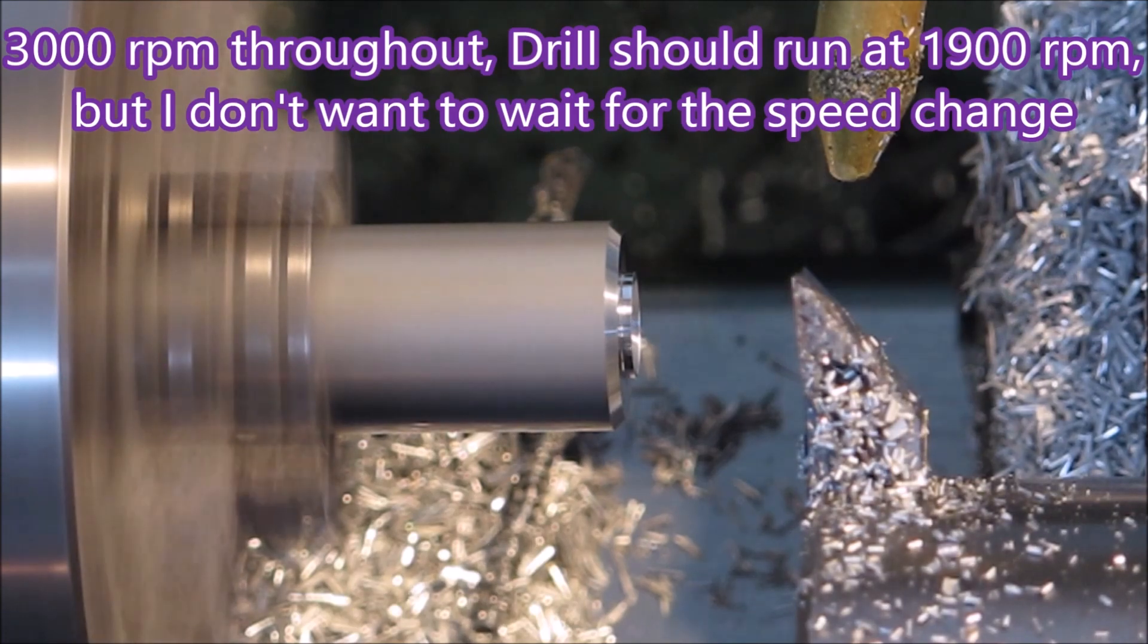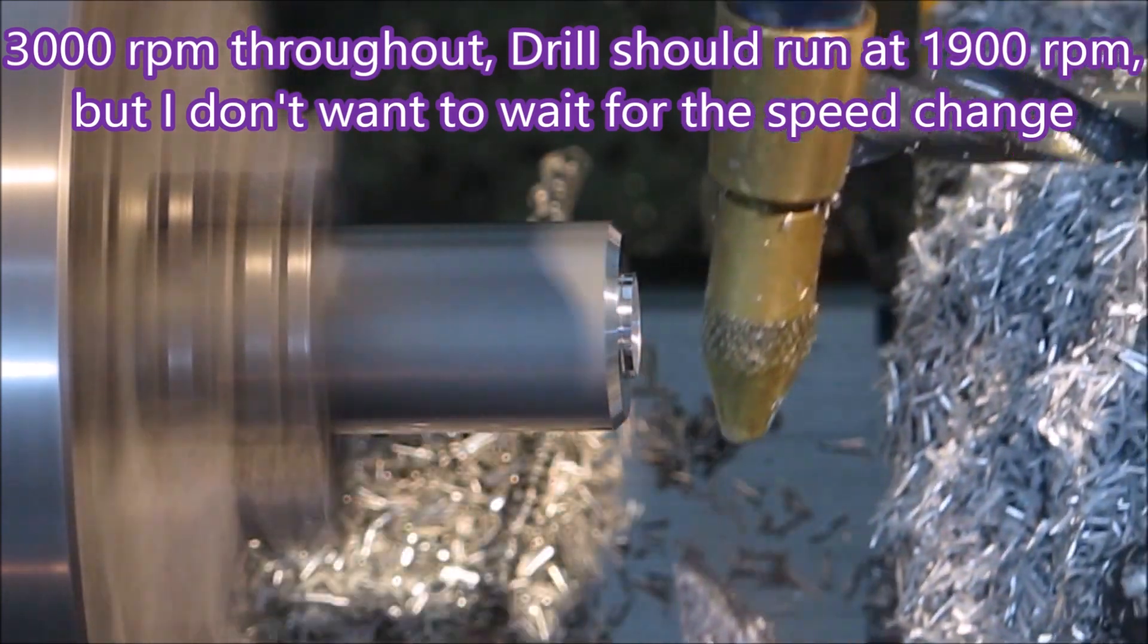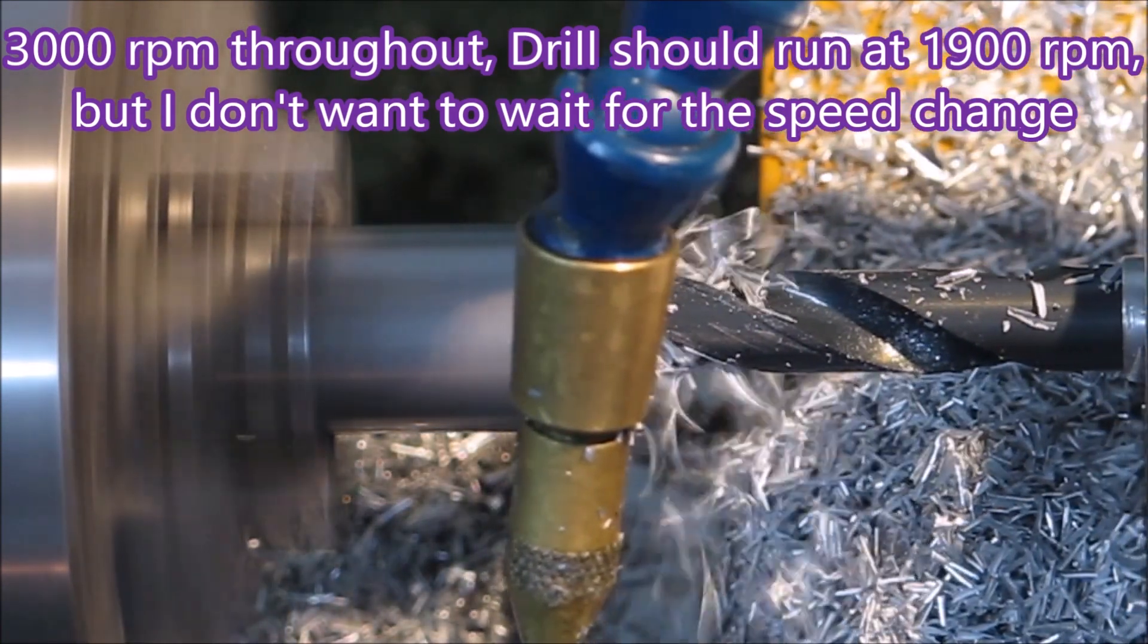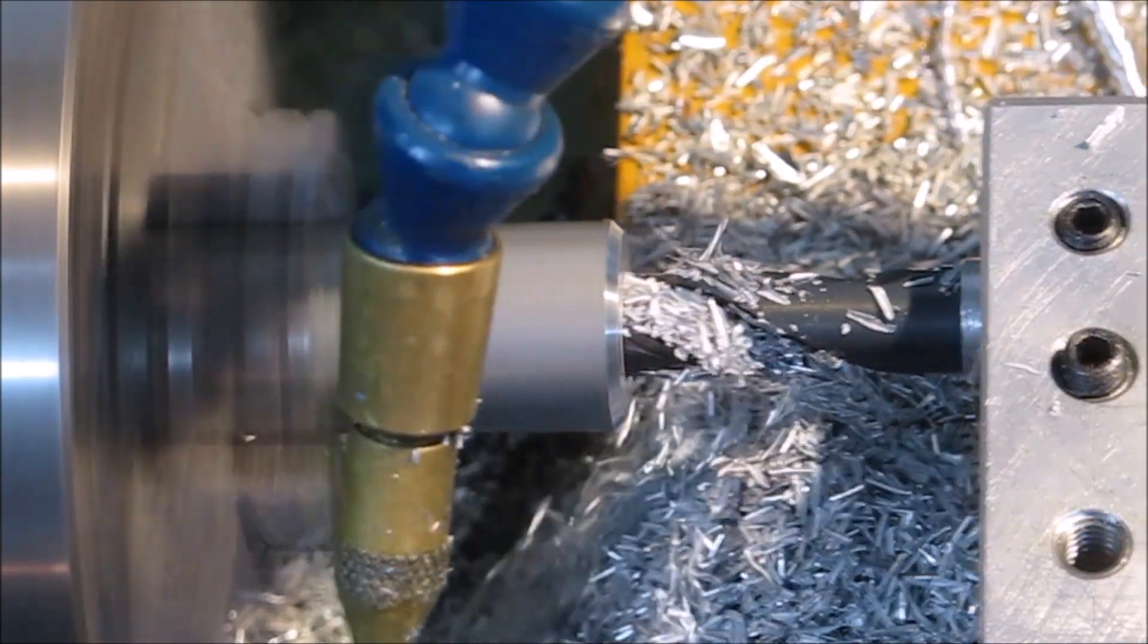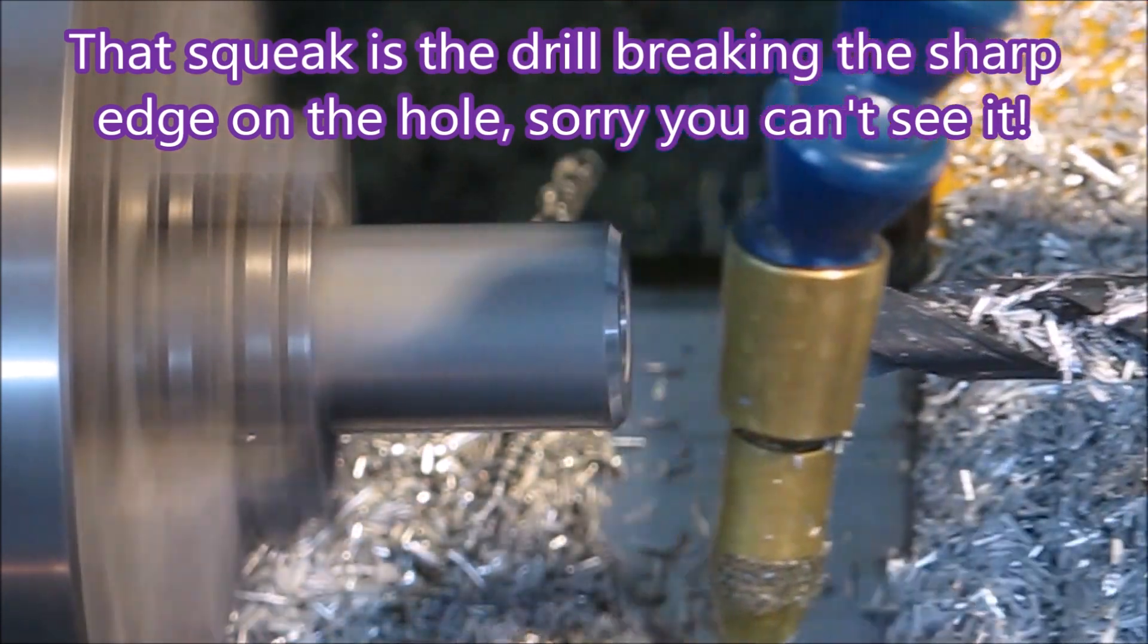The lathe is doing 3000 RPM, which is too fast for the drill really, but for a job like this you can see the swarf is just pouring out from the flutes, it's really not an issue.